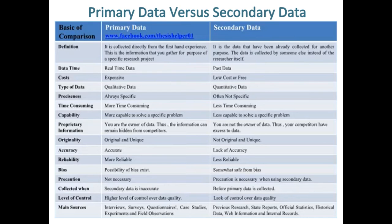Primary data is accurate while secondary data has a lack of accuracy. Primary data is more reliable while secondary data is less reliable. Possibility of bias exists in primary data.